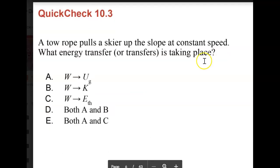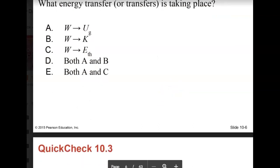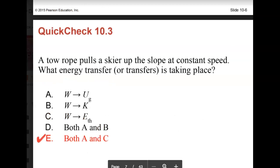Okay, a tow rope pulls the skier up the slope at constant speed. What energy transfer or transfers are taking place? Now, the tow rope is pulling up at constant speed. What do we have here? Work done is going into what? Well, both A and C.